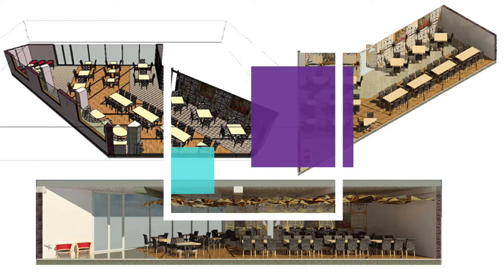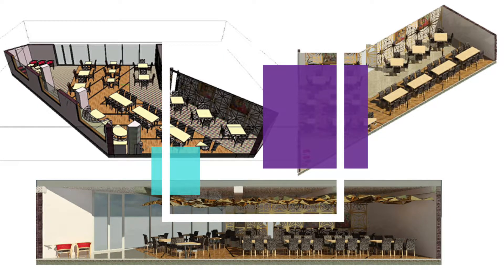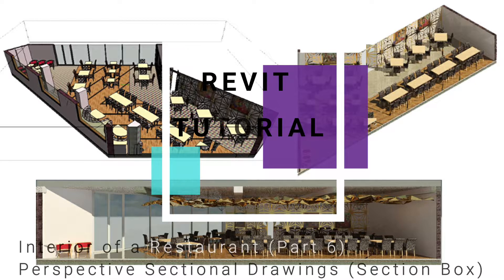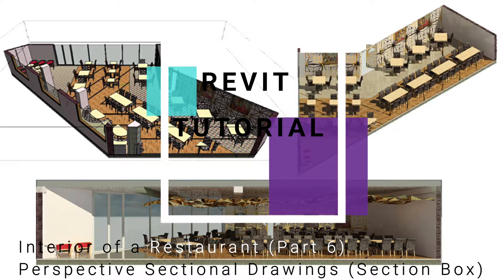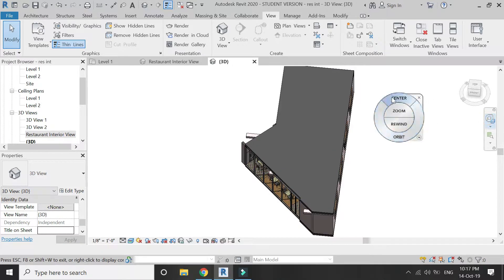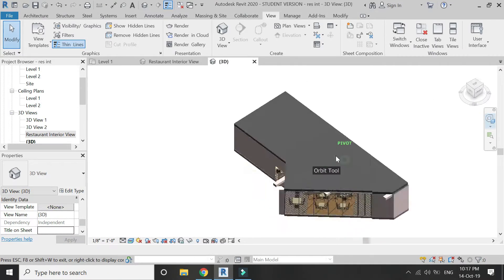Hello everyone. In today's video I am going to show you how to create orthographic and perspective sectional drawings in Revit with the help of the section box. The link to the previous video on camera settings is in the description box. Before we start, please like and share my videos, leave a comment below, and subscribe to my channel. If you have any difficulty or query related to Revit you can ask me anytime. Now let's start.